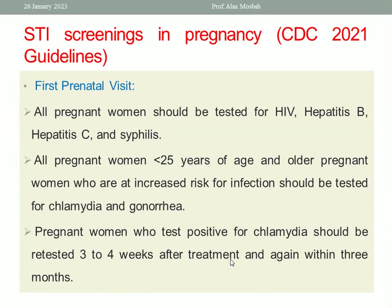Let us go to STI screening in pregnancy according to CDC guidelines 2021. We divide screening into two times: first prenatal visit and the last trimester. At the first prenatal visit, all pregnant women should be tested for HIV, hepatitis B, hepatitis C, and syphilis. So during antenatal care at the first visit, please test for HIV, hepatitis B, hepatitis C, and syphilis.